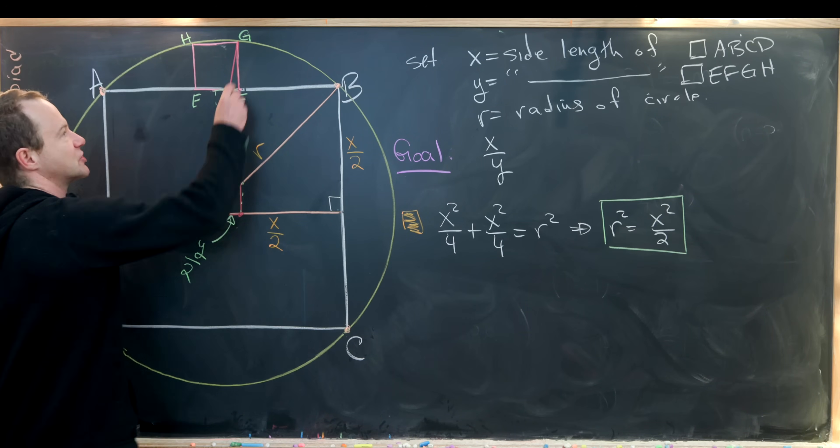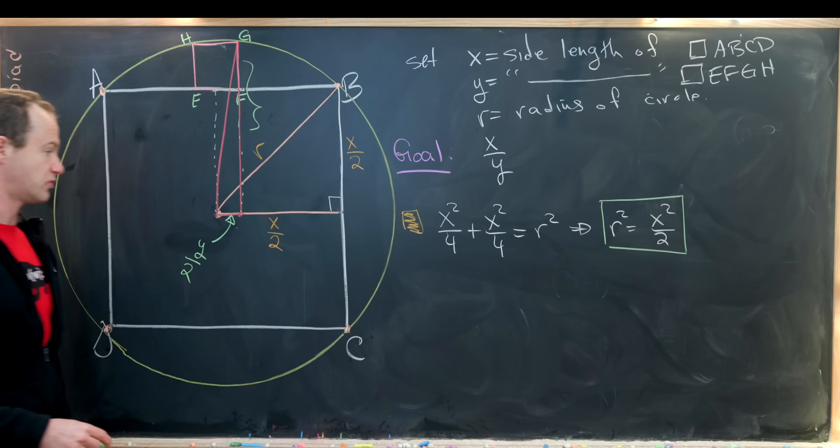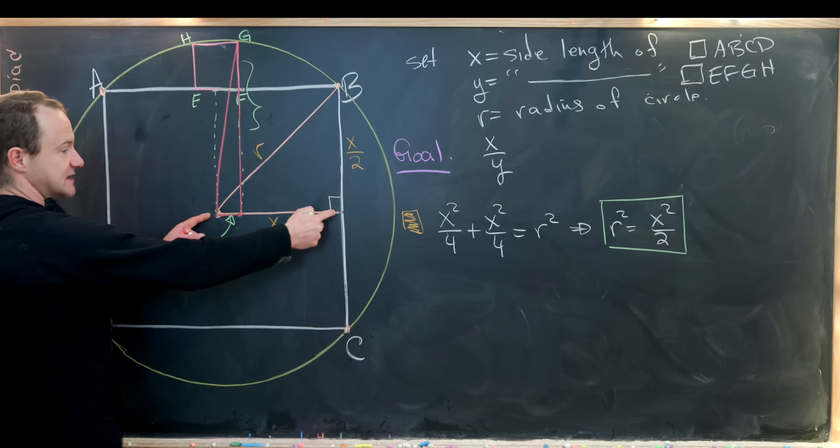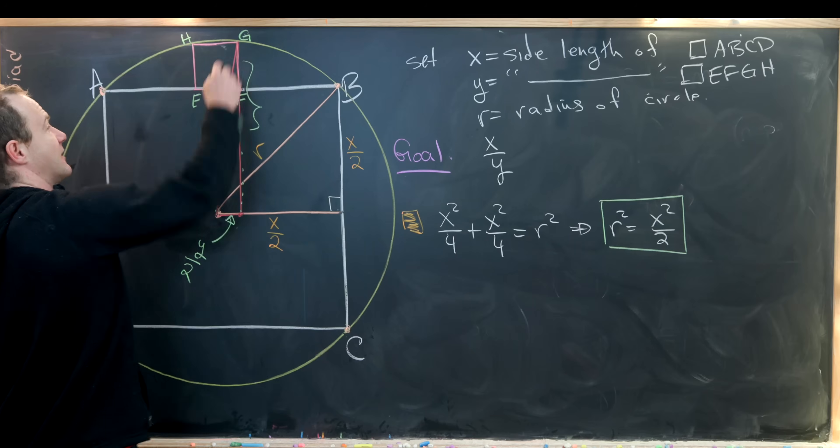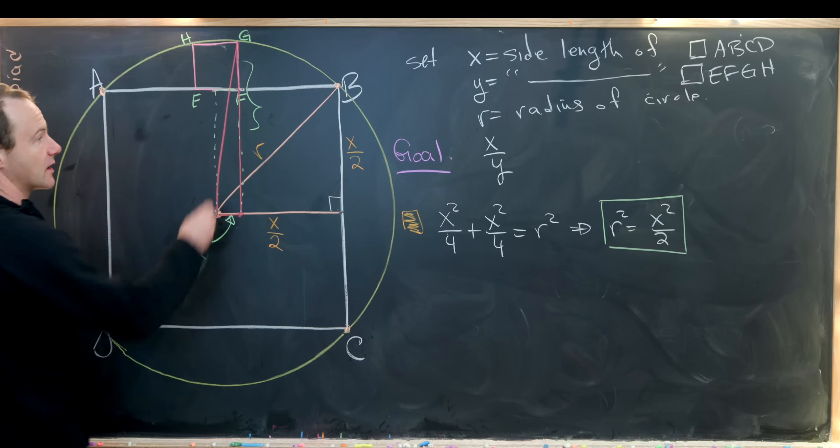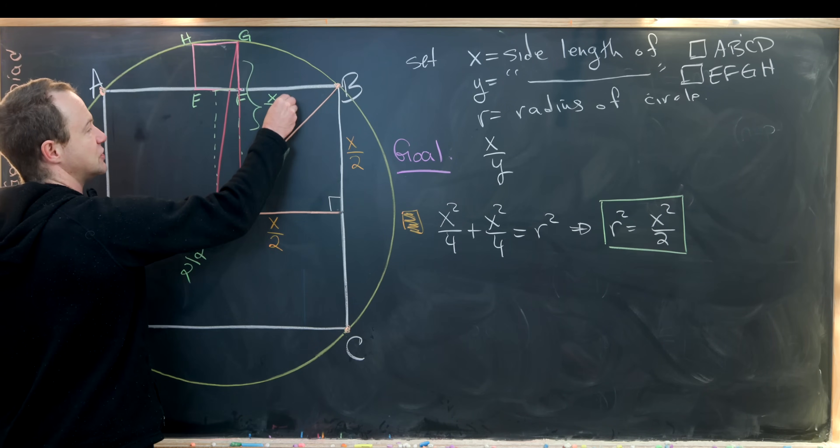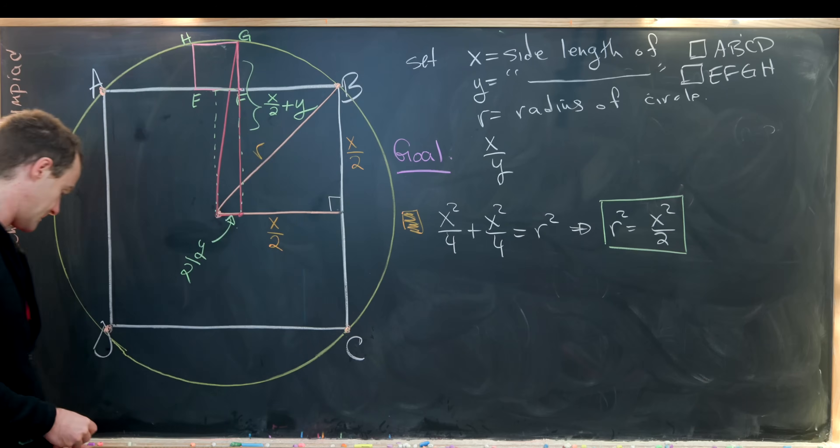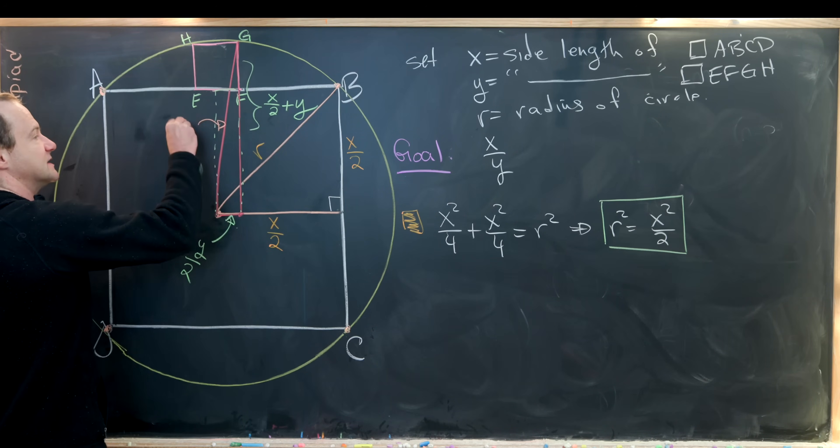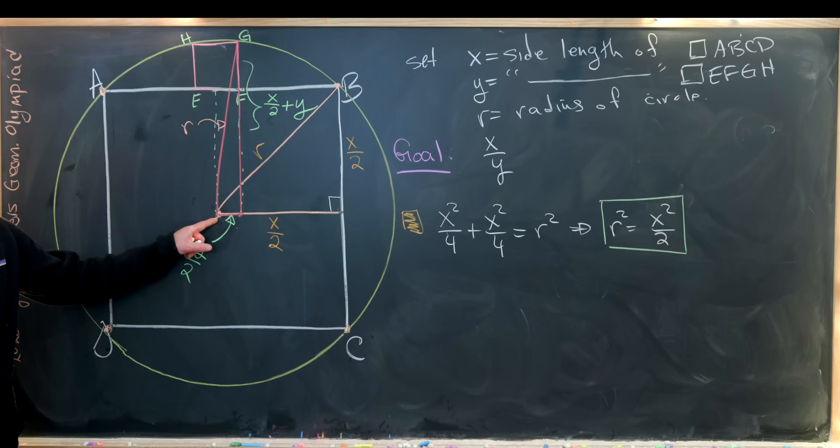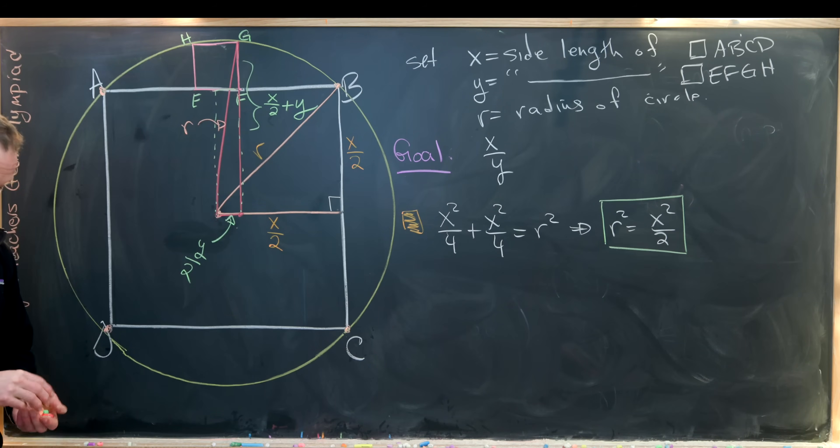Then we can measure this distance as well pretty easily. So we've got a distance of X over 2 from this transposed over here, and then a distance of Y from the side length of the small square. So this is X over 2 plus Y. And then finally, this guy right here is the radius again, because it goes from the center of the circle to the edge of the circle.